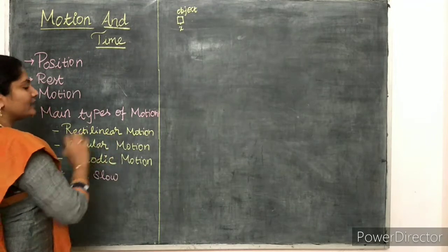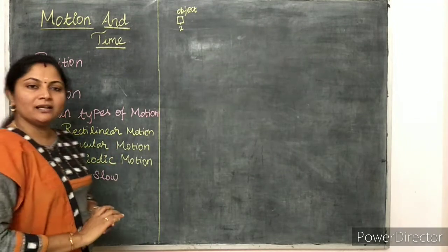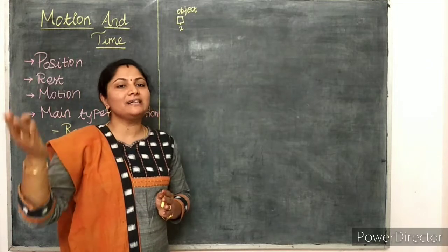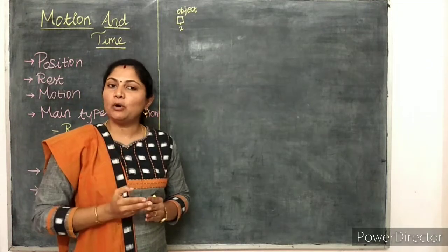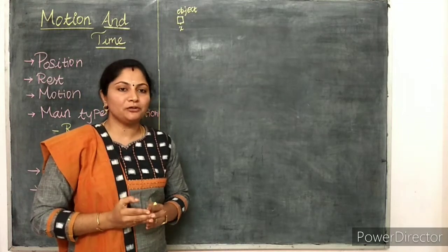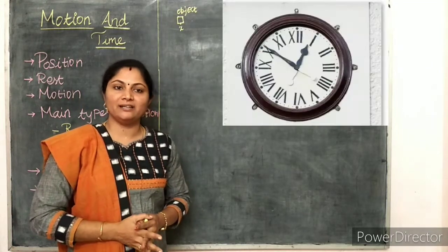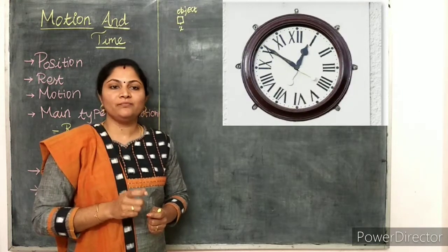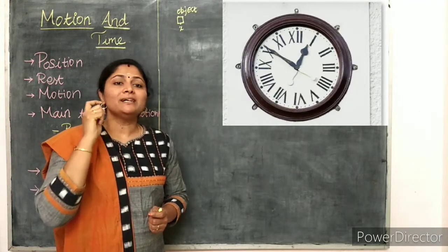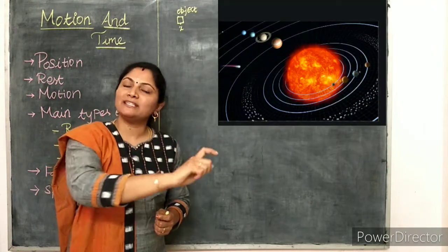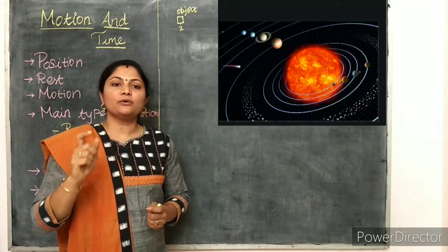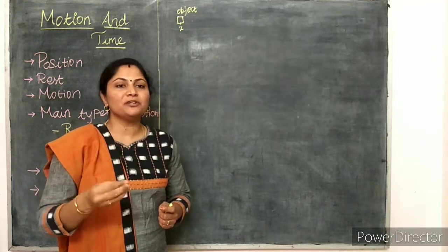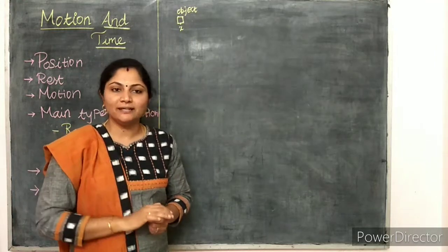Next, circular motion. Circular motion means if an object is moving in a circular path, then that object is said to be in circular motion. Examples include the arms of a clock and the planets revolving around the sun. If an object is moving in a circular path, that is said to be circular motion.